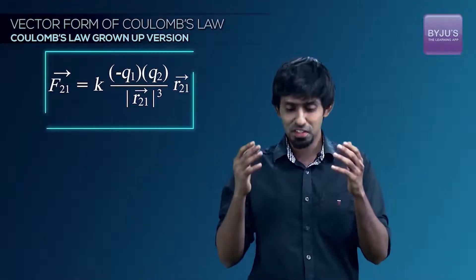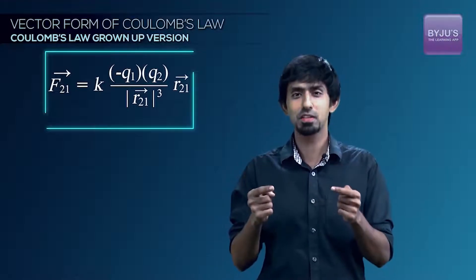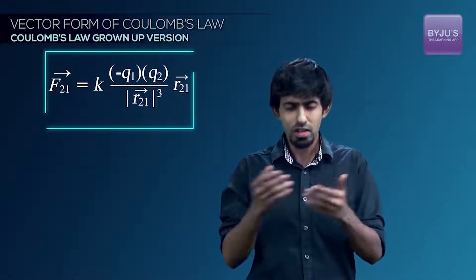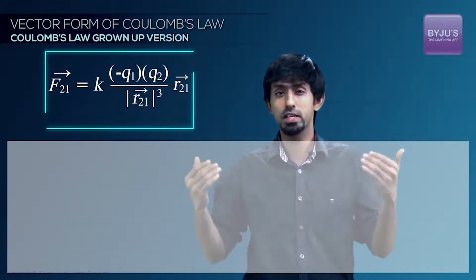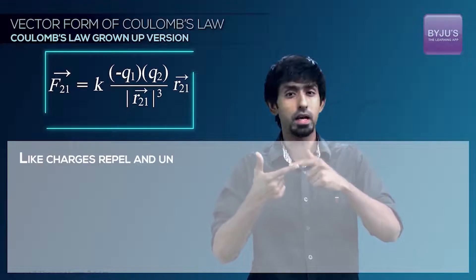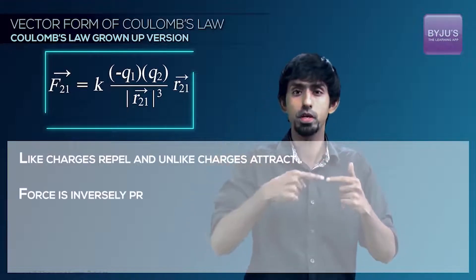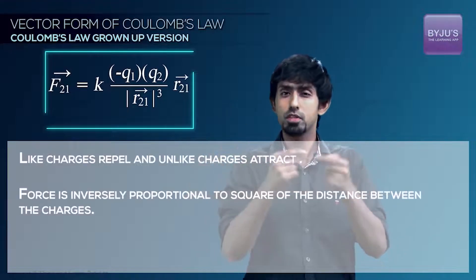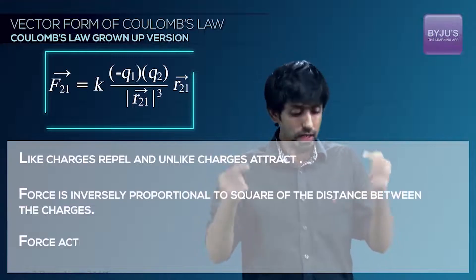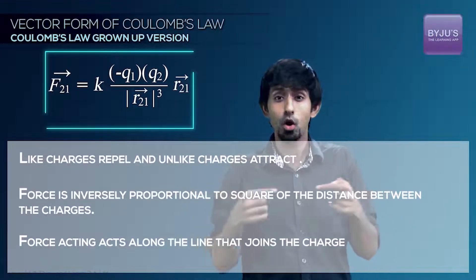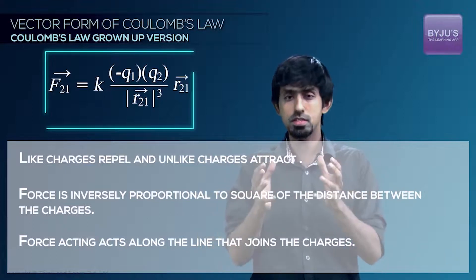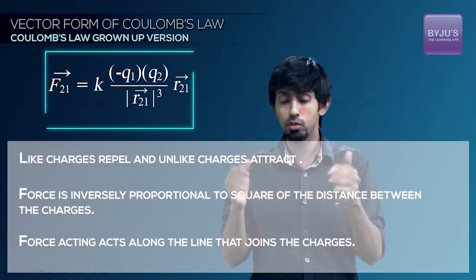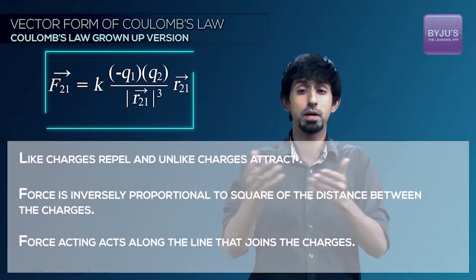So do you observe the beauty of this particular equation? Just a few symbols here is actually encapsulating a lot of long sentences that we've spoken. We said that like charges repel and unlike charges attract, the force is inverse square. In other words, it reduces with the square of distance between them and the force acts along the line that joins them either in that direction or in this. All of this is encapsulated in this one particular form of the equation. And that's why vector forms and mathematics are beautiful.